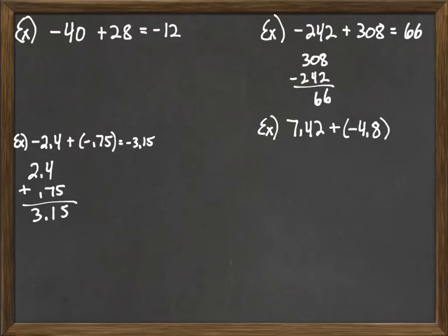As another example, again with decimals, we have 7.42 plus a negative 4.8. So they have different signs, so we're going to subtract them. Larger minus smaller. So 7.42 minus 4.8. So remember when we add or subtract decimals, we line them up. And then we just do our subtraction. 2 minus nothing is 2.